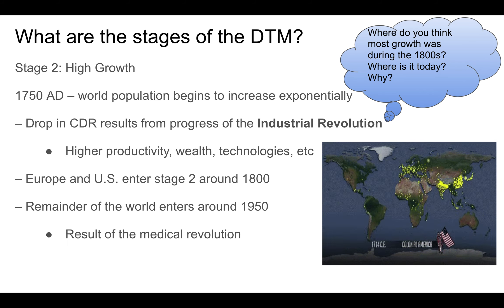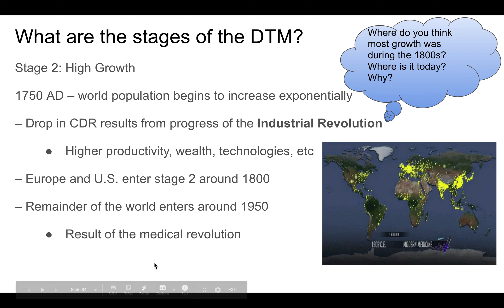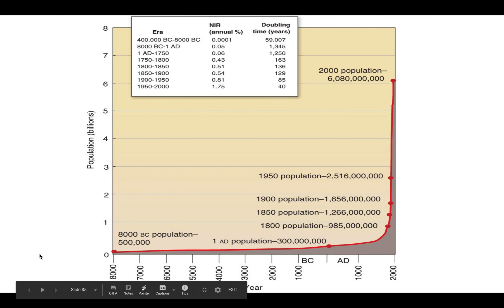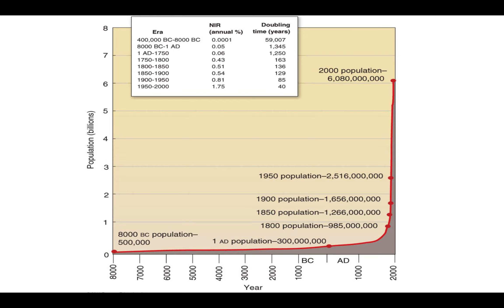Europe enters Stage 2 first, the US follows roughly 100 years later, and the remainder of the world enters around 1950 — mostly due to the medical revolution. Looking at the line chart, we can see population really spikes with the Industrial Revolution in the 1800s, further spikes in the 1900s with US industrialization, and again in the 1950s when countries in less developed regions used the medical revolution to industrialize.